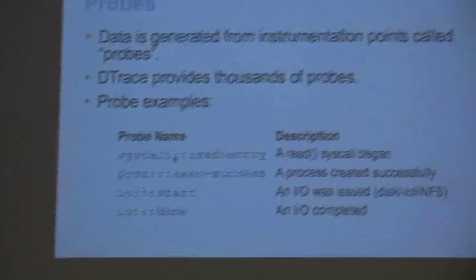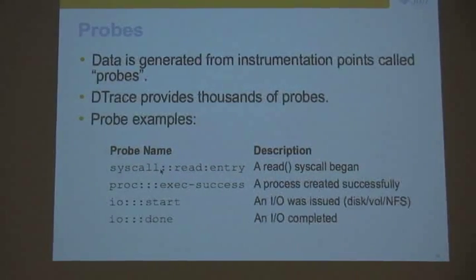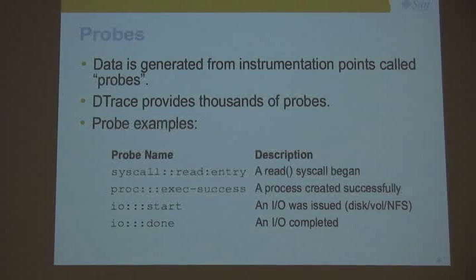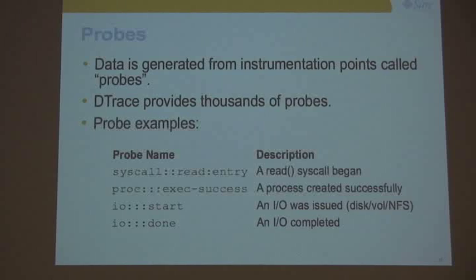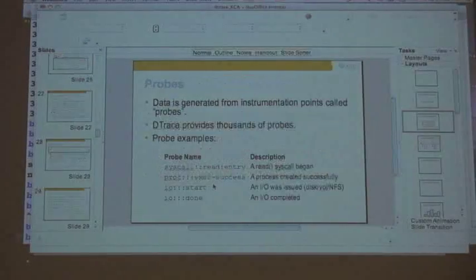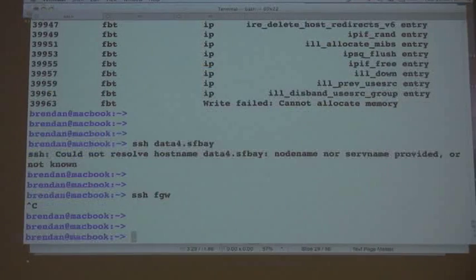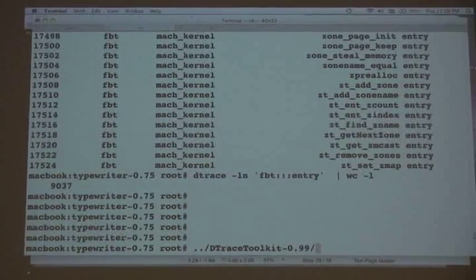Solaris 10 has least privilege. The probe format is, for example: syscall read entry. The big thing to understand about probes is the first argument is the provider name — think of it as a library name. That says syscall. What the other fields mean depends on the first. So for syscall, the other fields describe the system call; for proc, it's about process events; for IO, it's about IO events. I wrote a popular script to look at IO events — iosnoop.